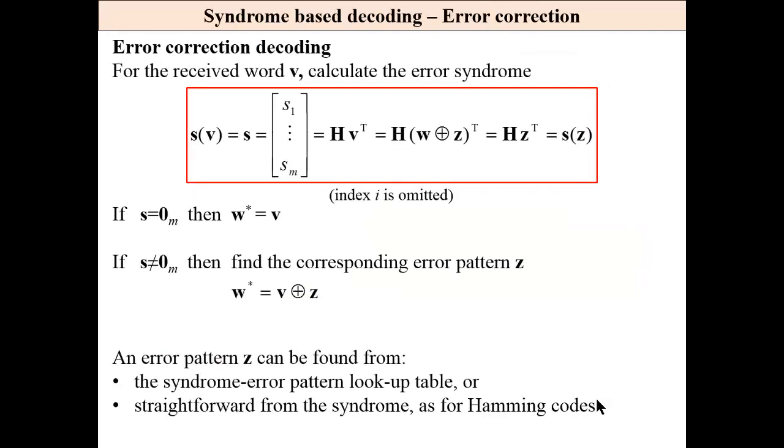Error correction decoding. So we calculate the syndrome. We calculate the syndrome for each error pattern. Then if syndrome is zero for the received word, we set w* equal to v.